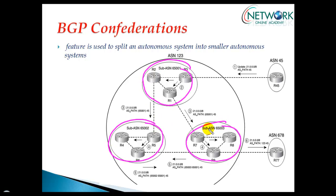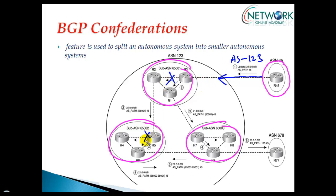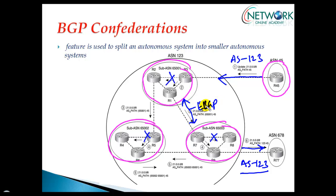We have three sub-AS in our diagram. For routers outside our AS, they will see this AS as only one AS — AS 123. They are not at all aware of the sub autonomous system numbers; this is something that only happens within the same AS. When routes are propagated outside the AS, they are sent with only one AS information, and between the sub-AS we configure confederations EBGP.